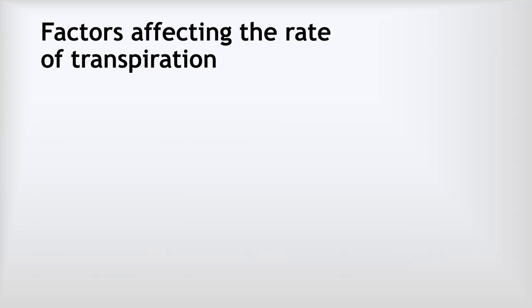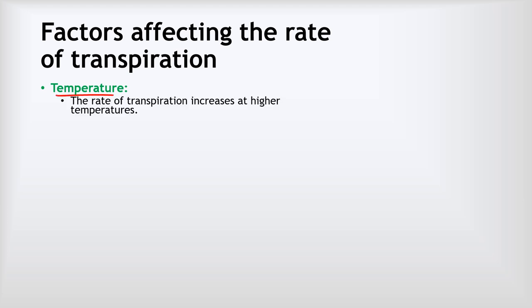Let's consider some of the factors affecting the rate of transpiration. The first one is temperature. The rate of transpiration increases at higher temperatures simply because at increased temperatures we increase the rate of evaporation. Therefore, if more water is evaporating out of the leaves, the overall rate of transpiration will increase.